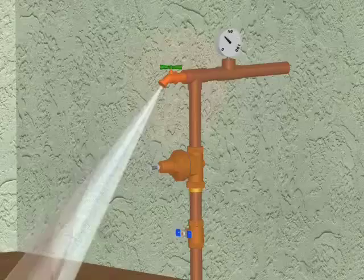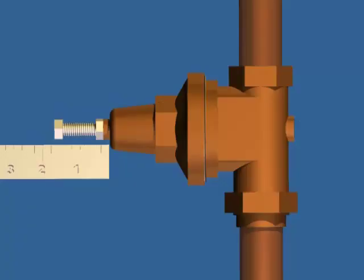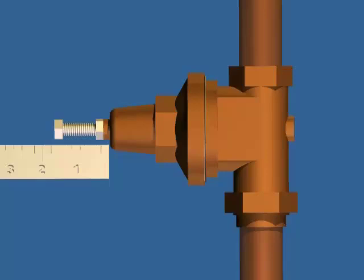You will then depressurize the valve by opening a downstream hose bib or a faucet. If you don't have a pressure gauge downstream of the regulator, you can measure the distance from the top of the adjustment bolt to the bell housing. This will allow you to readjust the valve to the proper outlet pressure after your repair.